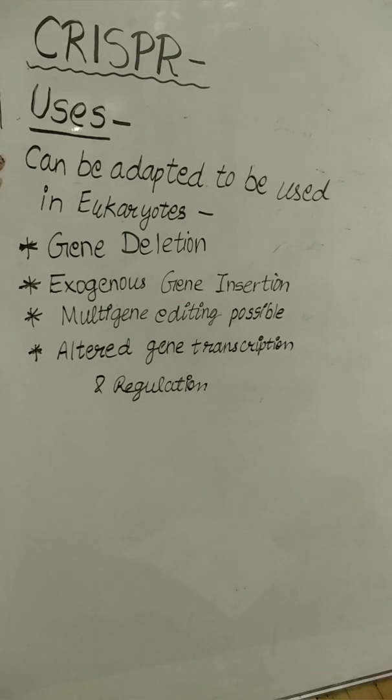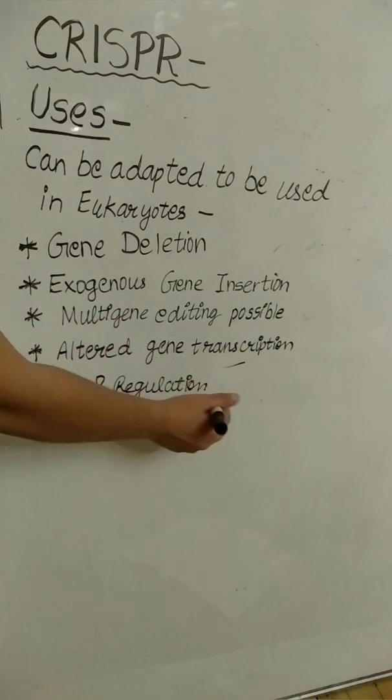It is not like random viruses, but it can be adapted to be used in eukaryotes like in gene deletion, exogenous gene insertion, multi-gene editing, and altering gene transcription and regulation.